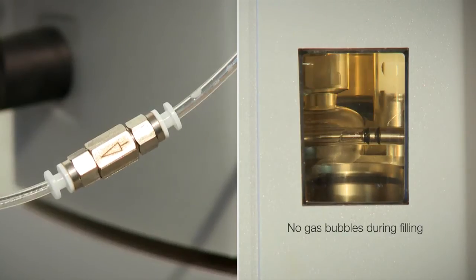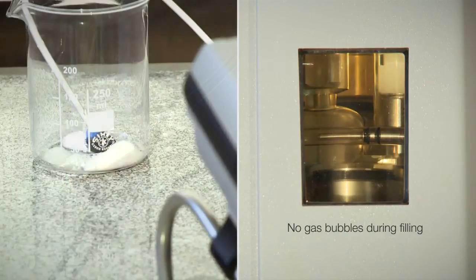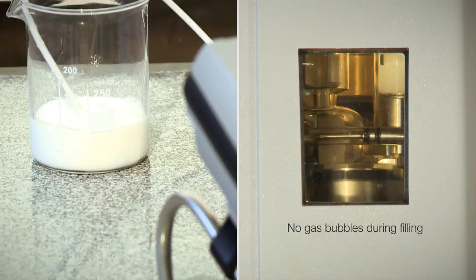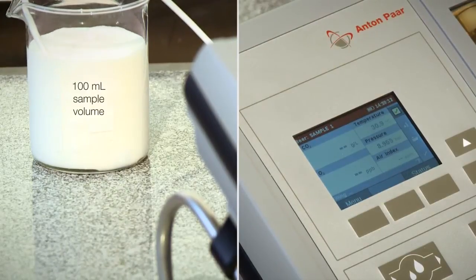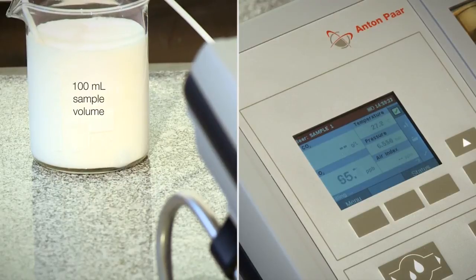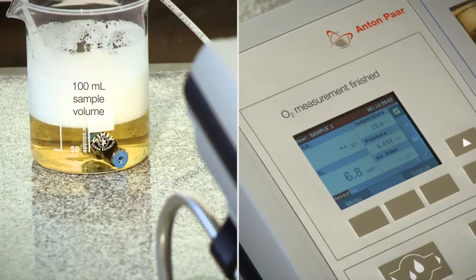While the instrument is rinsed and filled with sample, make sure that no gas bubbles are visible in the measuring chamber window. Use 100 milliliters of sample for the measurement. As a first step, the O2 measurement is performed.